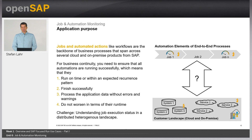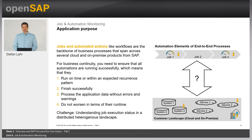Job and automation actions like workflow are the backbone of business processes that span across several cloud and on-premise products from SAP. For business continuity, you need to ensure that all automations are running successfully — that they run on time or within the expected recurrence pattern, that they finish successfully, that they process application data without errors and warnings, and that they do not worsen in terms of runtime. This is a big challenge for an administrator to understand job execution status in a distributed heterogeneous landscape combining on-premise systems and cloud services.